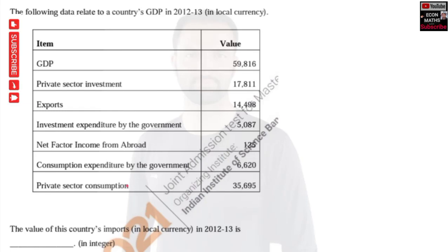Hi, this is Hilal. In this video we will try to solve a problem that was asked in IIT JAM Economics paper of 2021. The question is: the following data relate to a country's GDP in 2012 and 2013 in local currency. We are given the GDP data and we have to calculate the value of this country's imports in local currency.